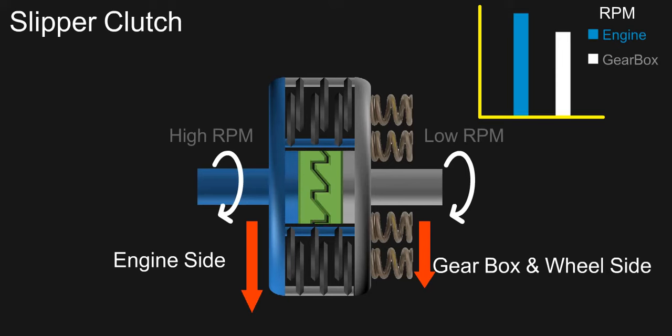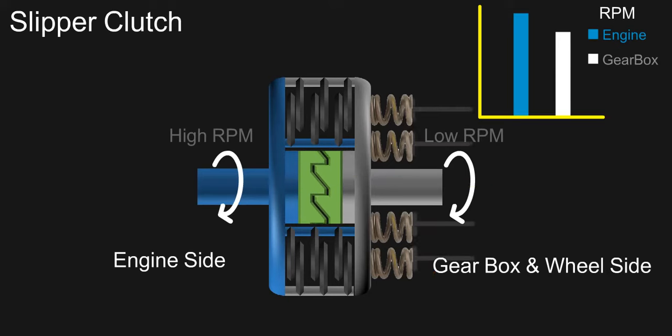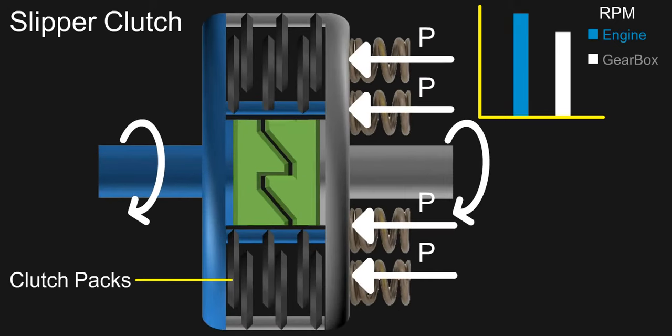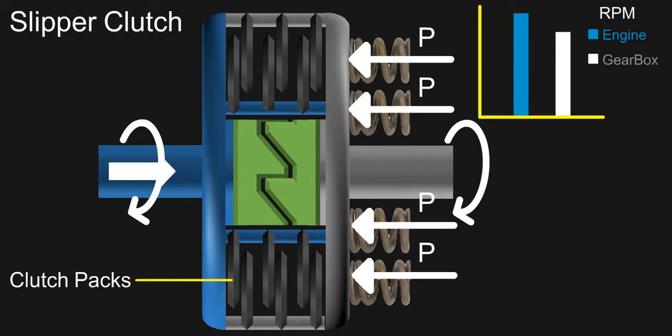So this is running faster and this is running slower. So these sections come in contact and both of them rotate together. The springs are putting pressure on the drum, which forces the clutch packs together, transmitting the motion to the gearbox from the engine.